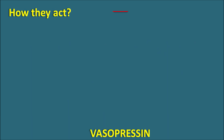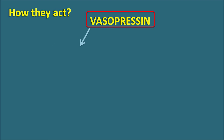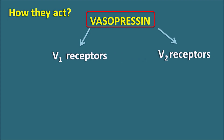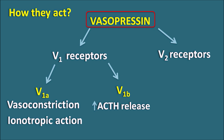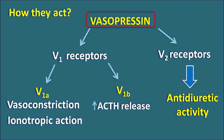Now let us see how these hormones act. Vasopressin is a natural anti-diuretic hormone that acts on two types of vasopressin receptors: V1 receptors and V2 receptors. V1 receptors can be further classified as V1A and V1B receptors. V1A receptors are mainly present on vascular smooth muscle and are responsible for vasoconstriction as well as increased force of contraction (positive inotropic action). V1B receptors are mainly responsible for increased ACTH release. V2 receptors are mainly present at the collecting tubules where they produce anti-diuretic activity.